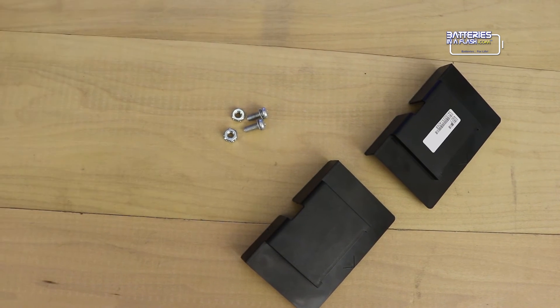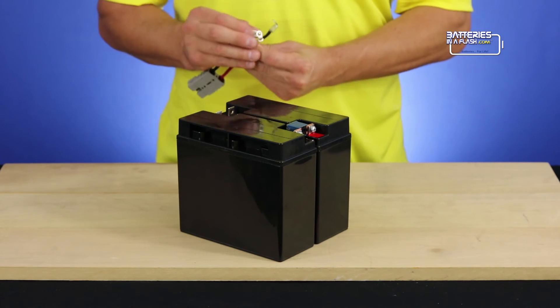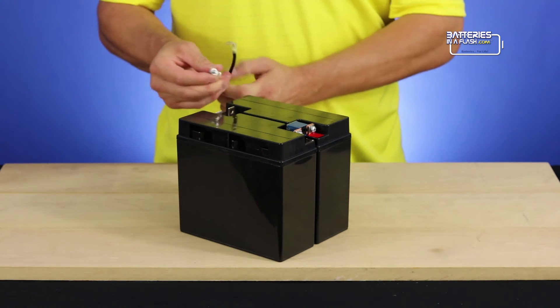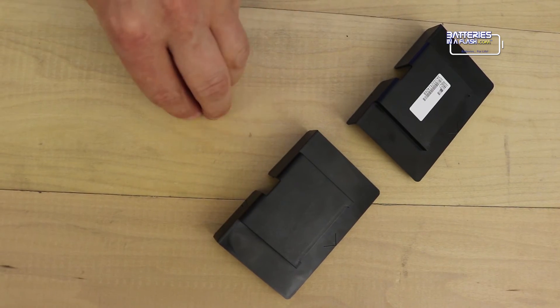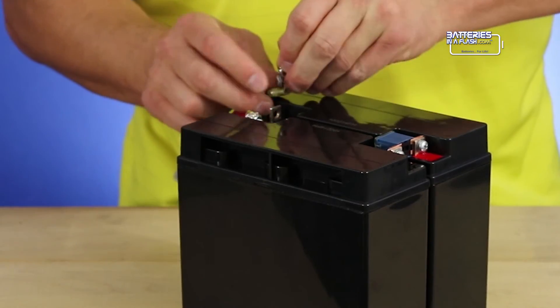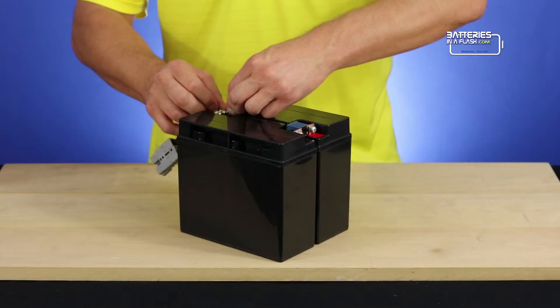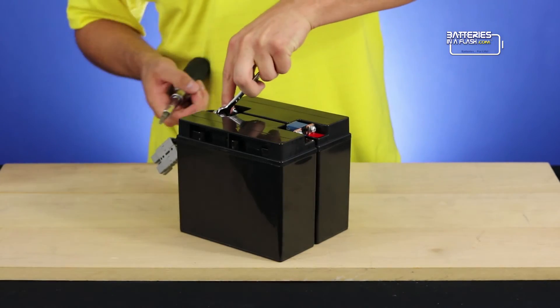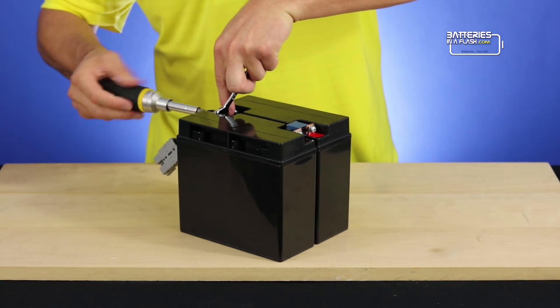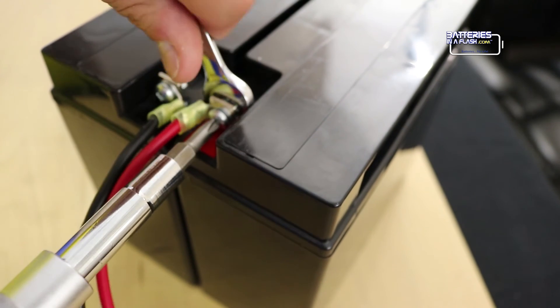Now, let's begin working on the connector. Start by putting the screw through the eyelet of the connector, which will make it easier for us to put it through the battery terminal. Be sure to connect the red wire to the red terminal and the black wire to the black terminal. Now that we have the screws and the connectors, we can begin tightening them with the screwdriver and the wrench. Be sure not to over-tighten.